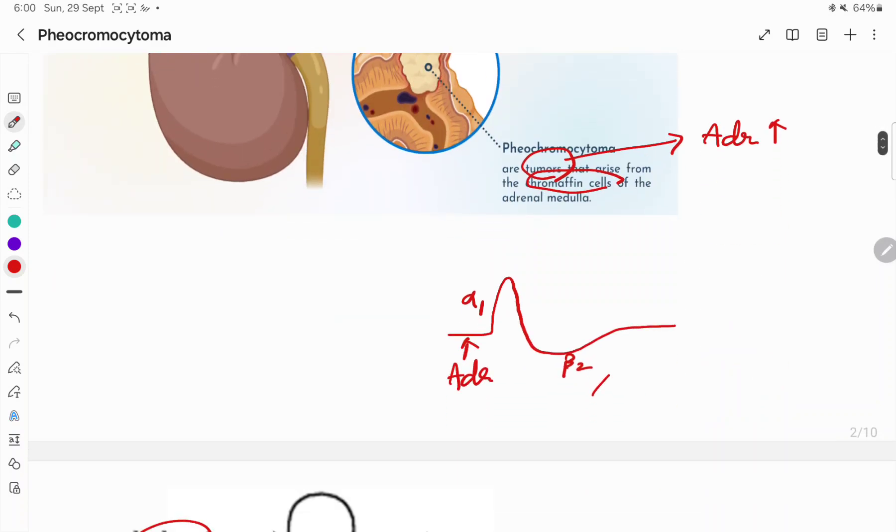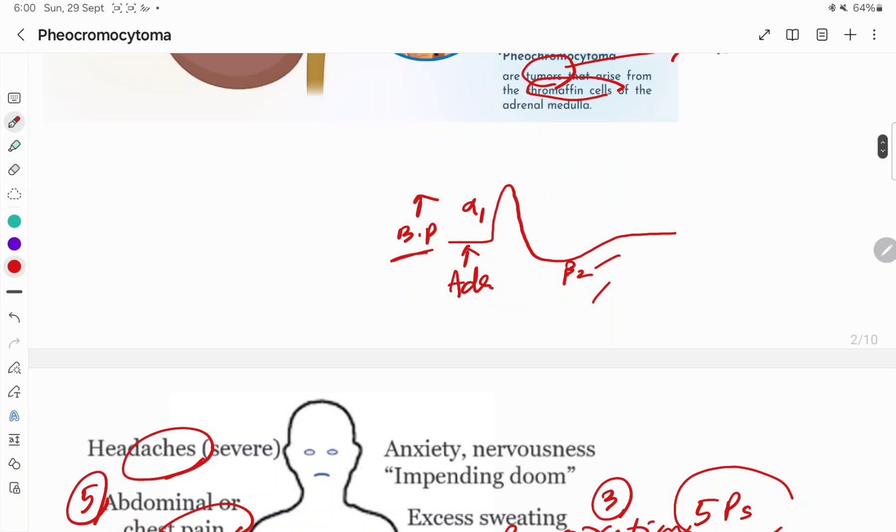Adrenaline has a biphasic action. The initial rise in blood pressure is caused by alpha-1 receptor, followed by a prolonged fall in blood pressure due to beta-2 receptor stimulation. But the predominant action is alpha-1. When there is high concentration of adrenaline, that results in activation of alpha-1 receptor, which results in blood pressure increase and hypertension.